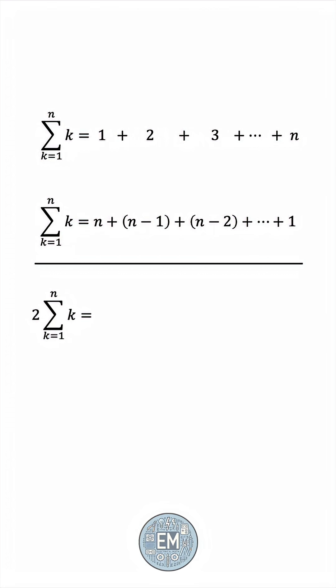We have n plus 1 for the first pair, and then 2 plus n minus 1, that's also n plus 1. 3 plus n minus 2, that's also n plus 1, and this will keep going on and on.